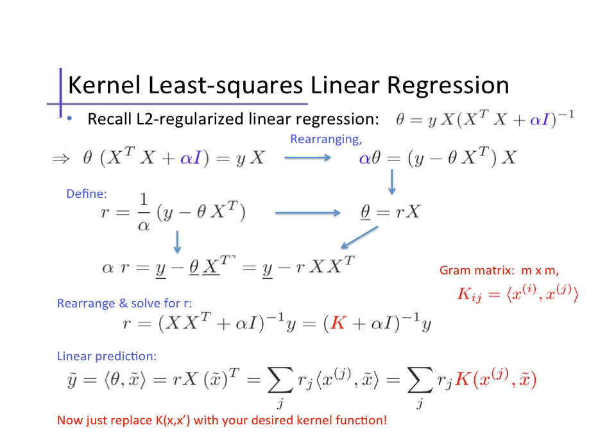As one side note, unlike the alpha before, here r will not be sparse. It will be non-zero for all the data. Another common support vector regression method uses a hinge-like regression loss that's zero up to some amount of error, and this allows some of the r values to be zero as well. Another point worth mentioning is the similarity of this prediction rule to methods like locally weighted regression.